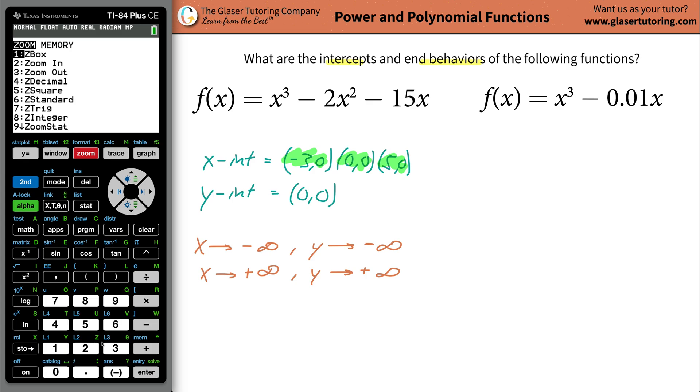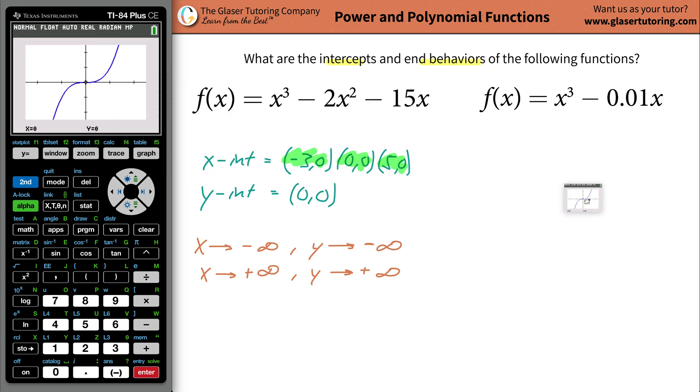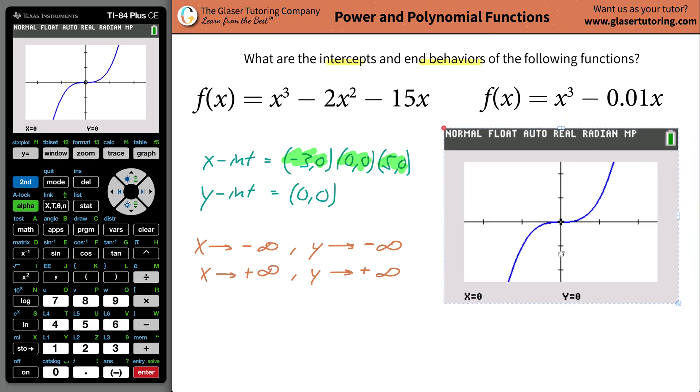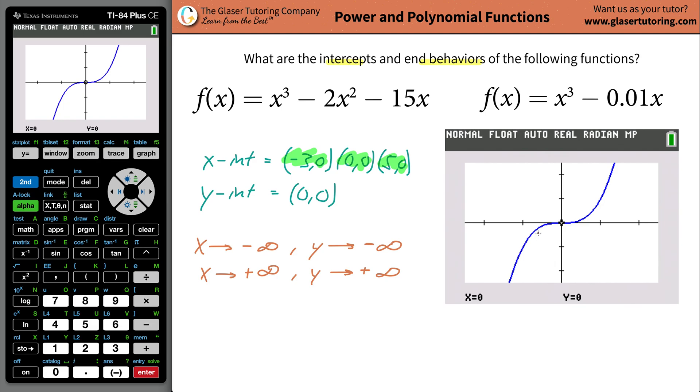So now we have this. So let's first talk about the end behavior of this particular function. So as the graph goes on and on and on to the left, in other words, as x goes to negative infinity, what's happening to the y value? It's also going to negative infinity. So as x goes to negative infinity, y will also be going to negative infinity.